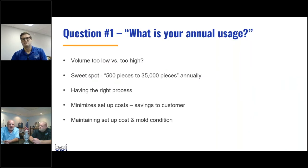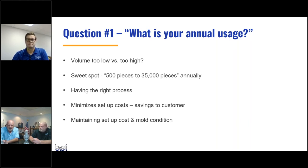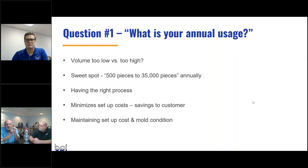Our sweet spot is 500 to 35,000 parts, but we find a lot of product in the 1,200 to 3,000 range. We want to make sure the product matches the process. It's also important to maintain cost — the setup cost and mold condition are critical to your final piece price. Making sure permanent mold volumes match your requirements is key.